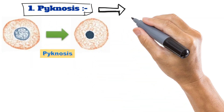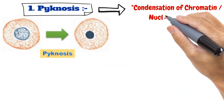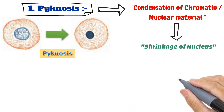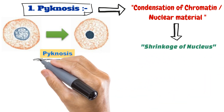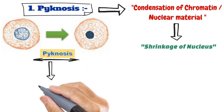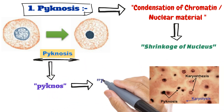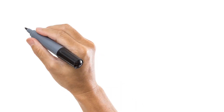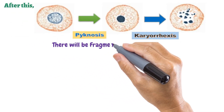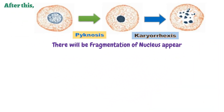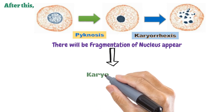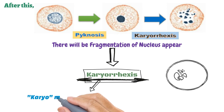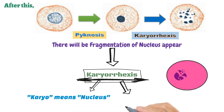First is pyknosis, which means condensation of chromatin or nuclear material, leading to shrinkage of the nucleus. This word comes from the Greek word 'pyknos,' meaning thickening or condensation. After this, fragmentation of the nucleus appears, and this term is known as karyorrhexis. Breaking down the term: 'karyo' means nucleus and 'rexis' means bursting or fragmentation.